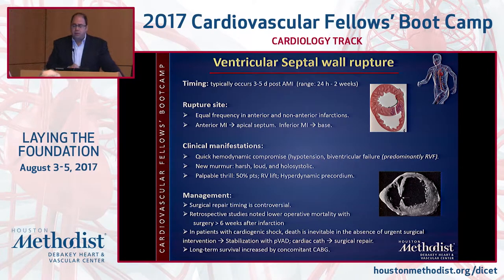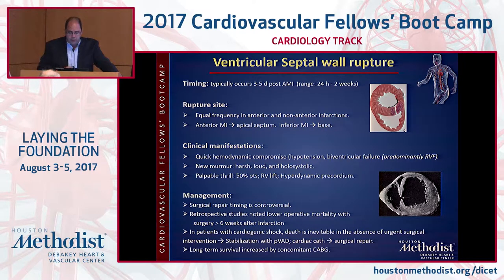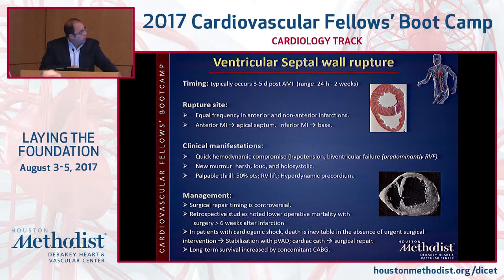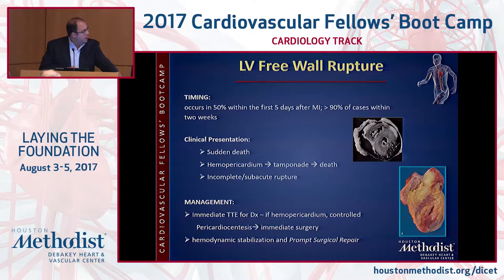The second is ventricular septal wall rupture. It usually occurs three to five days post-acute MI, ranging between 24 hours up to two weeks. It occurs in equal frequency in anterior and non-anterior locations. With anterior MI it affects the apical septum; with inferior MI it occurs at the base. Clinical manifestations include acute hypotension, biventricular failure, and a new harsh loud holosystolic murmur with palpable thrill in 50 percent, RV lift, and hypodynamic precordium. Management: stabilization with percutaneous devices, then surgical repair.